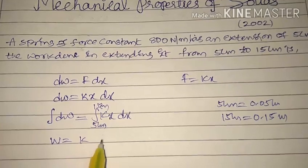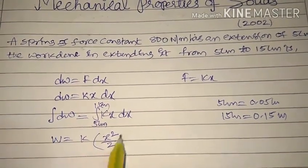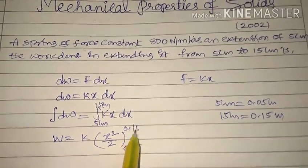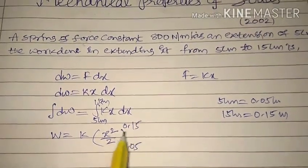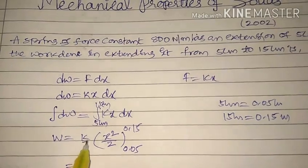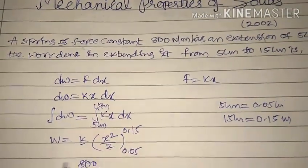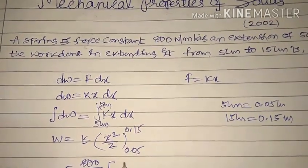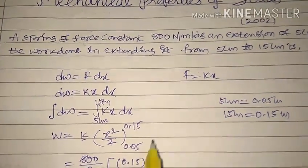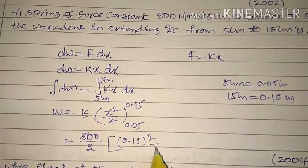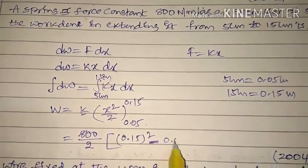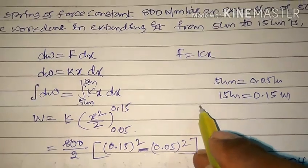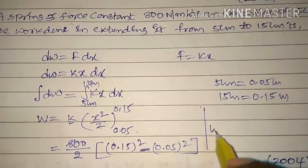So W = k·x²/2 with limits 0.05 to 0.15. Applying the limits: W = (800/2) × (0.15² − 0.05²) = 400 × (0.15² − 0.05²).